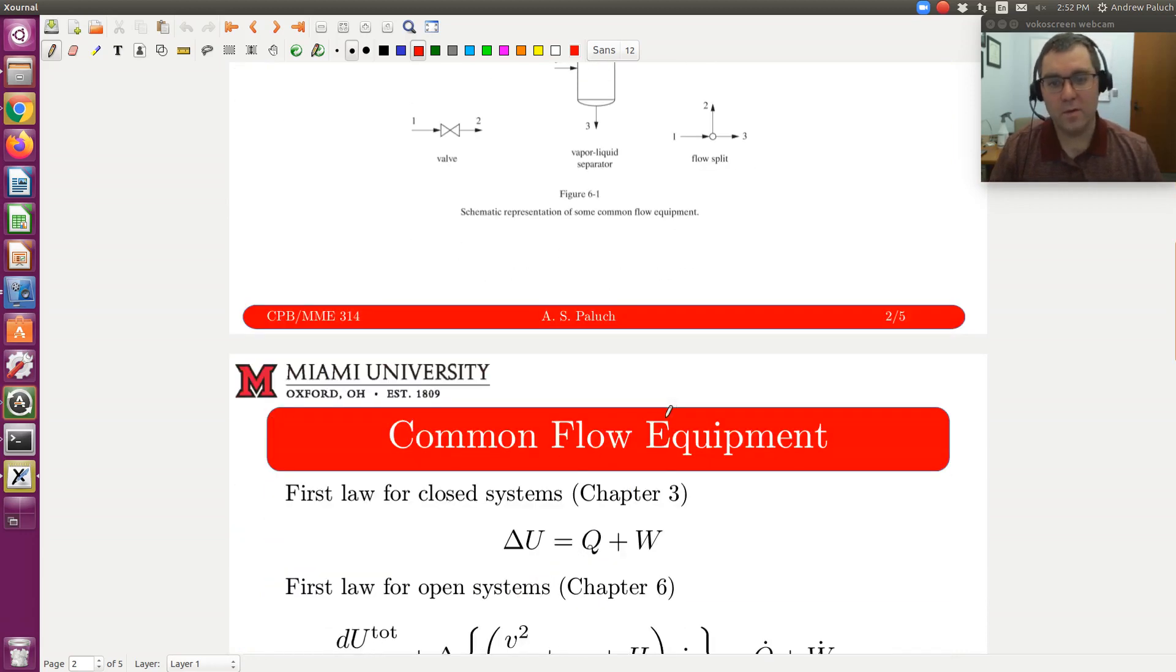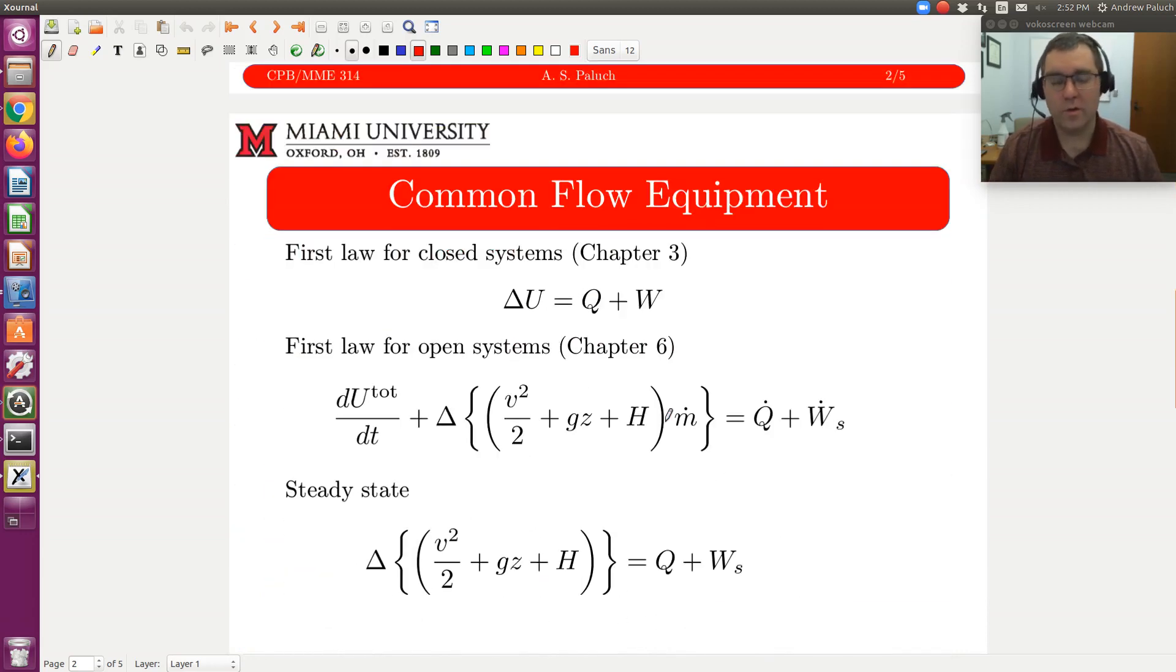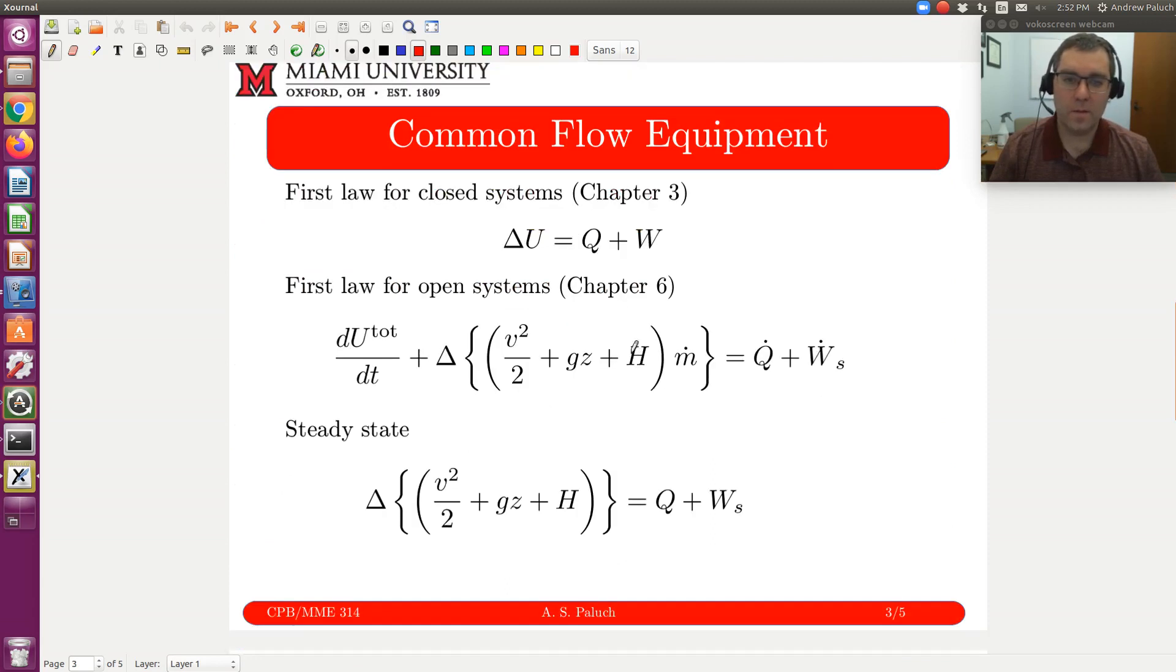Just a couple notes on our general first law balance. First here, I have our first law balance for closed systems, which we developed in Chapter 3. Delta U equals Q plus W. Q corresponds to heat added to or removed from our system. W is our net work. In general, that could refer to work in the form of PV boundary work done by or on our system. It could also include shaft work.